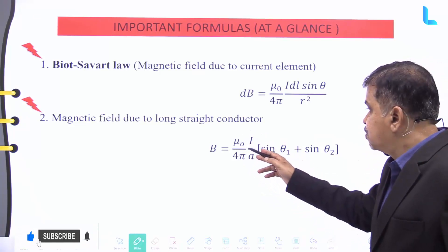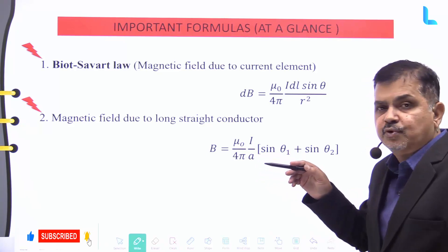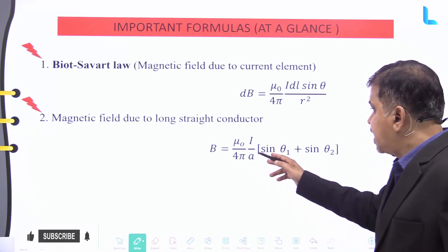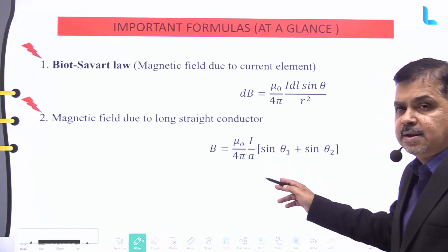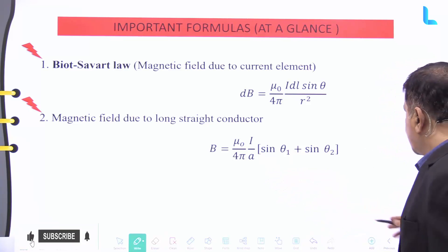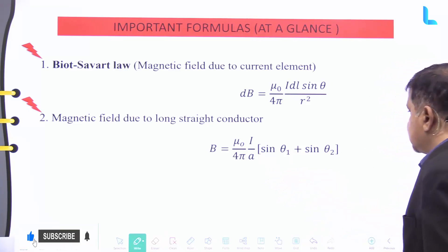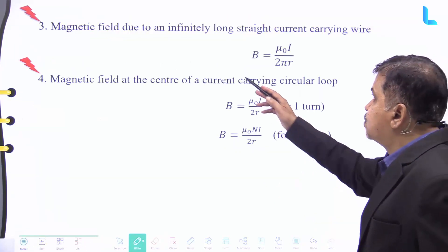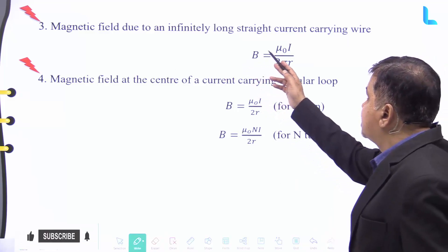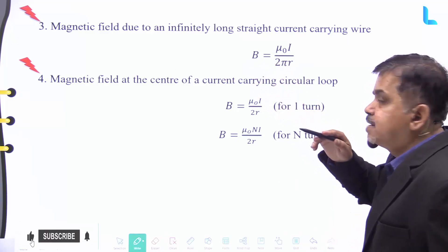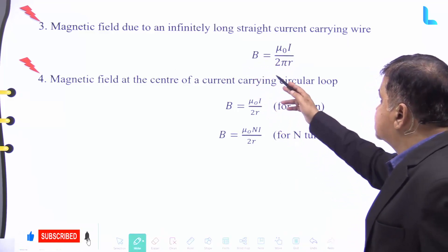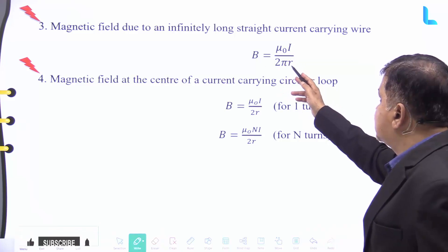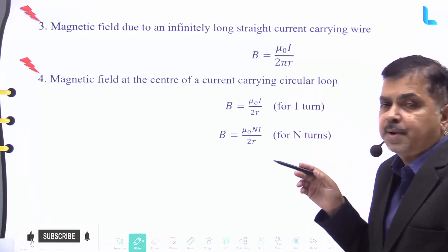The magnetic field due to a long straight conductor is equal to mu naught divided by four pi, into i divided by a, in bracket (sine theta one plus sine theta two). The magnetic field due to an infinitely long straight current-carrying wire is given by mu naught times i divided by two pi r.